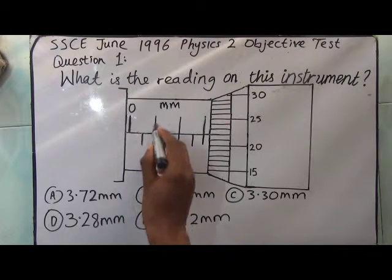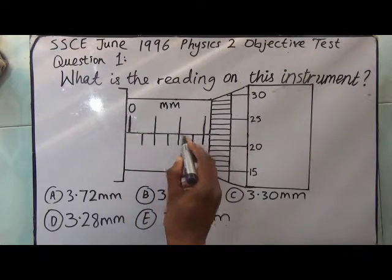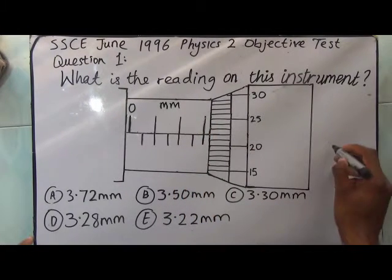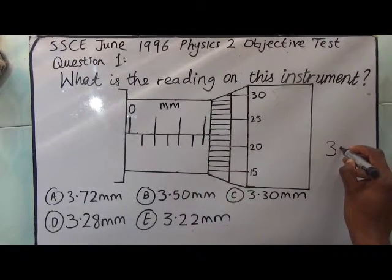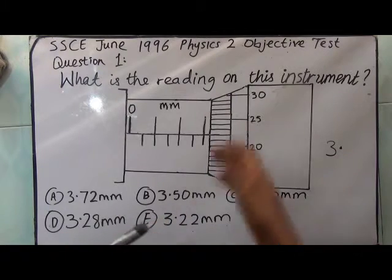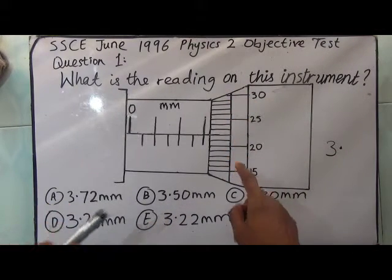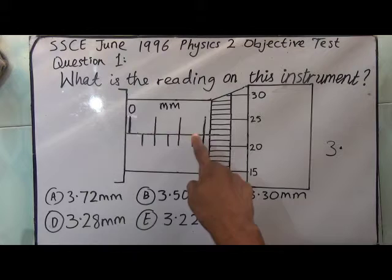So what value do you have on the main scale? 0, 0.5, 1, 1.5, 2, 2.5, 3. We have 3mm, okay, 3 decimal point.